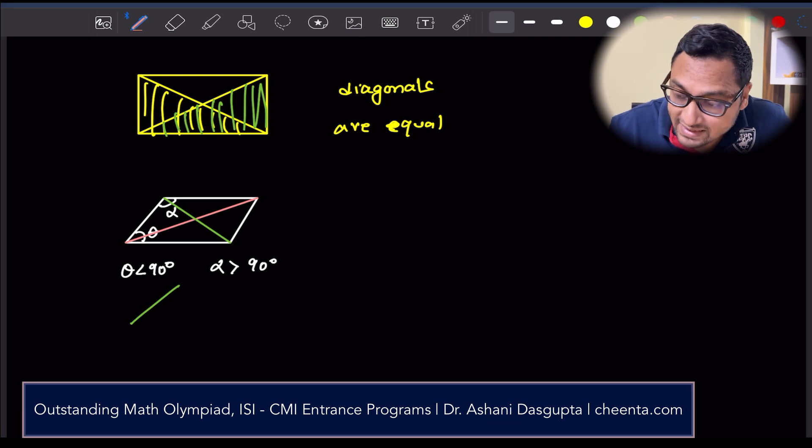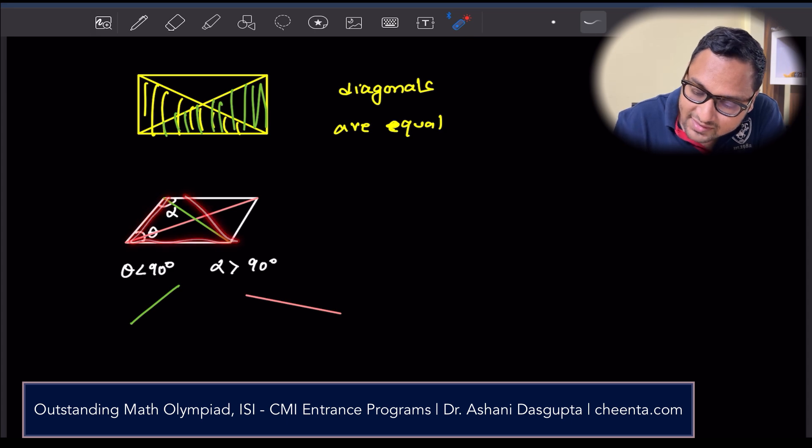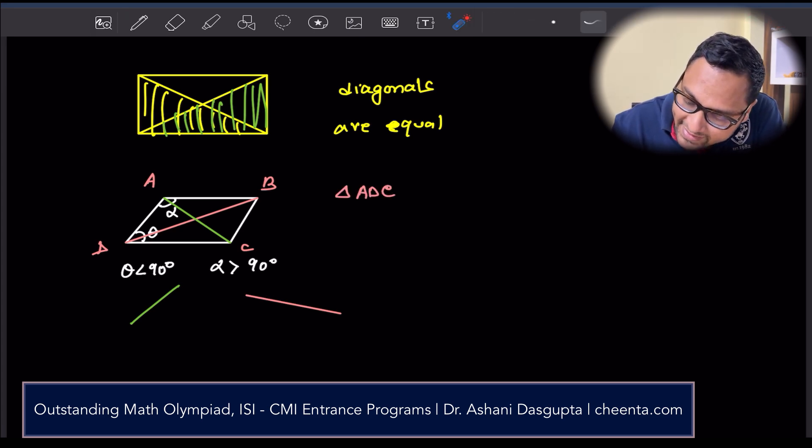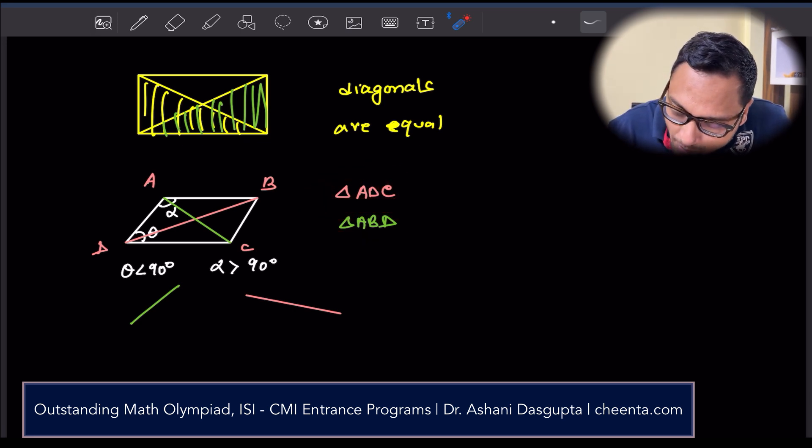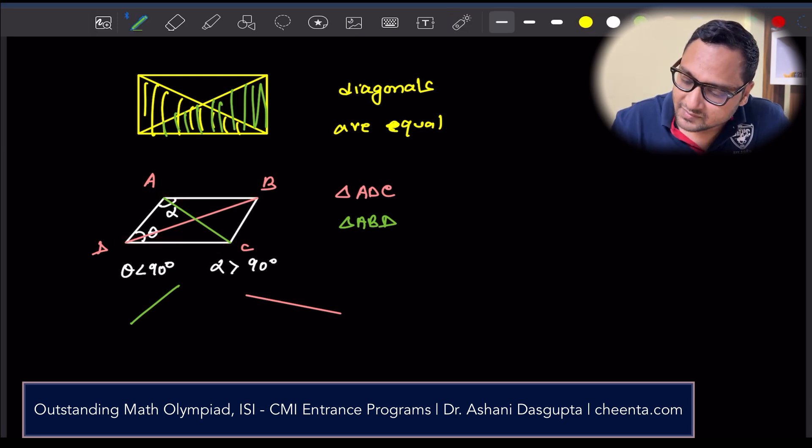Why is that? Well, notice that if you look at this triangle, let's call this ABCD. If you look at the triangle ADC and triangle ABD, then ADC and ABD are almost the same. AD is common between them, and DC is equal to AB.